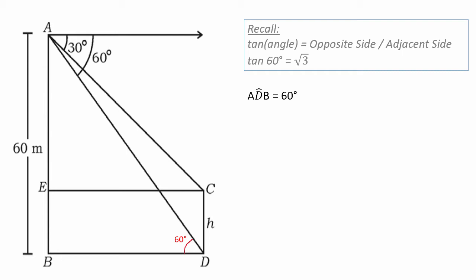First, angle ADB is 60 degrees. Why is angle ADB 60 degrees? Because this angle is the same as the angle of depression — these two lines are parallel, so the alternate angles are equal. That gives us 60 degrees.